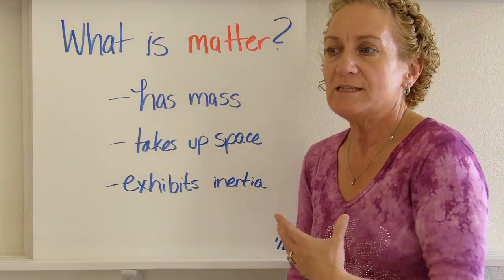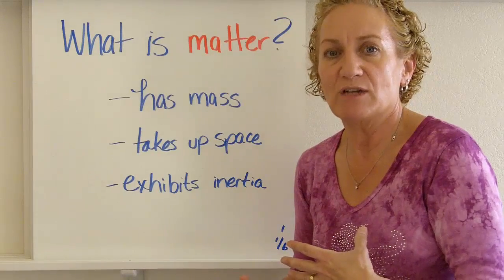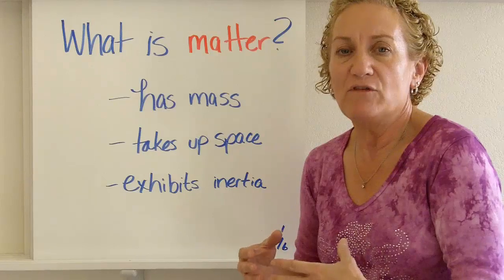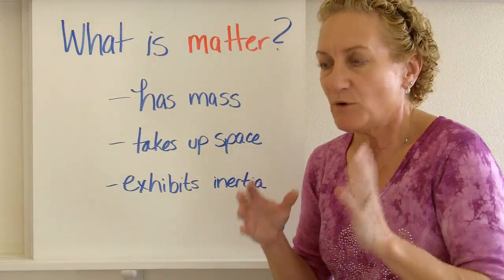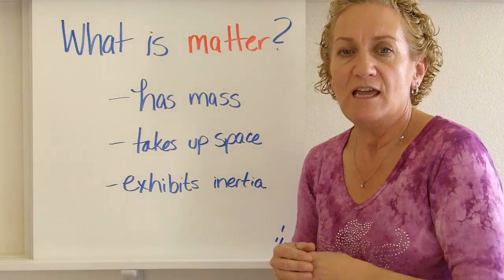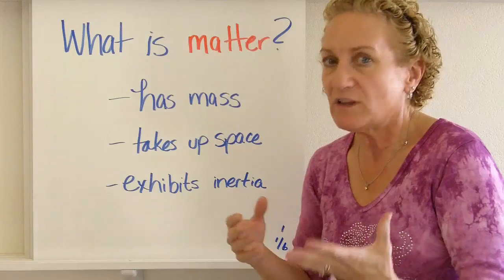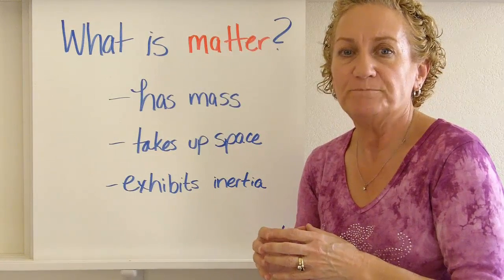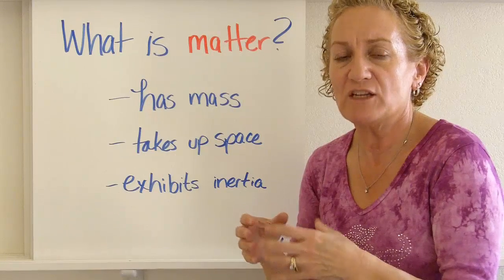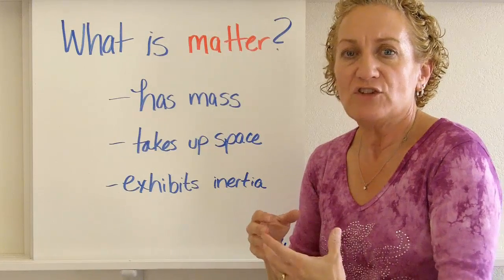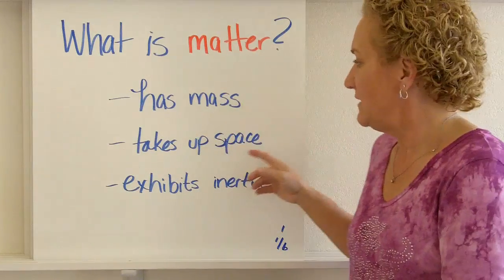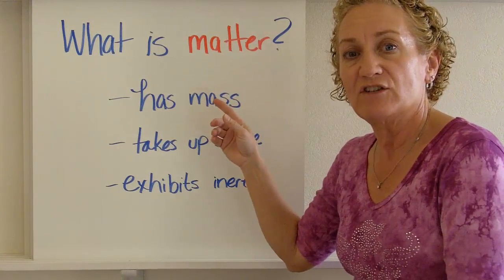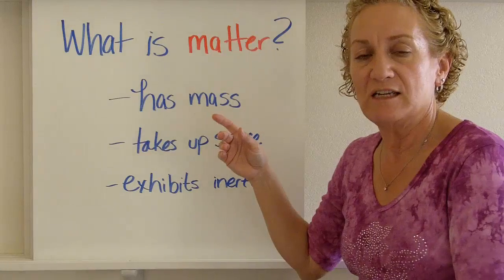The third thing is it has to exhibit inertia. Inertia is the laziness of an object — if something is not moving, it's perfectly content to stay at rest, and if something is in motion, it's perfectly content to keep moving. It doesn't want to change. So if something has mass, takes up space, and exhibits inertia, it meets the scientific definition for matter, which is what chemistry studies.